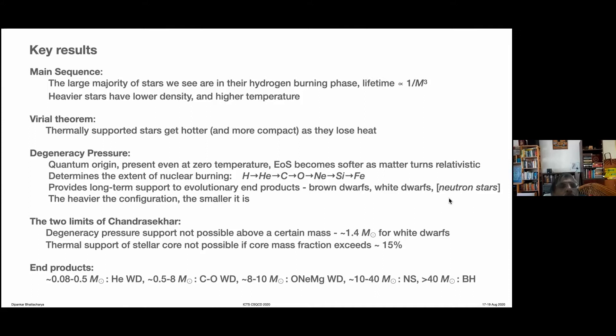Configurations held by degeneracy pressure have the property that the heavier the configuration, the smaller it is. As you pile on more mass, the object gets smaller and smaller, and at some point the object will cease to exist — that is the maximum mass that degeneracy pressure can support. This is the Chandrasekhar limit, which says degeneracy pressure support is not possible above about 1.4 times the mass of the sun for white dwarfs.